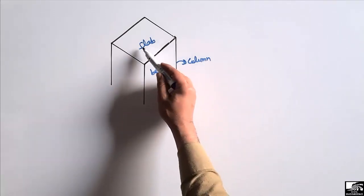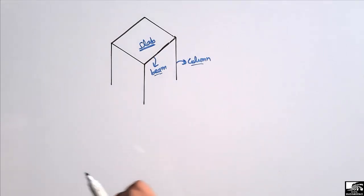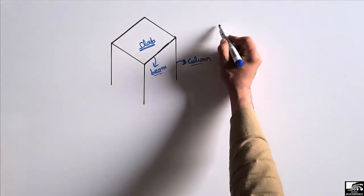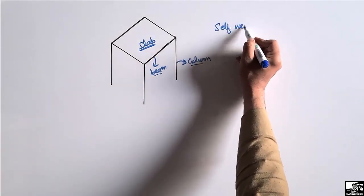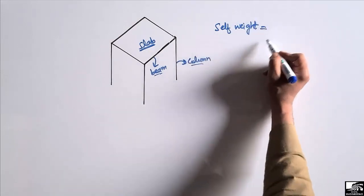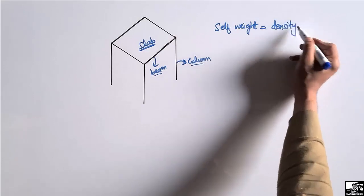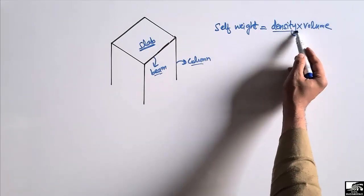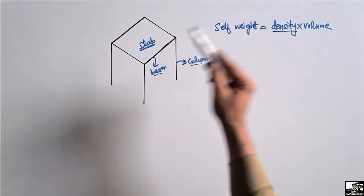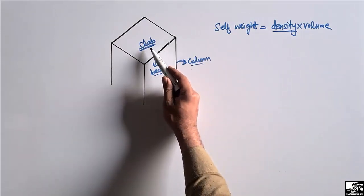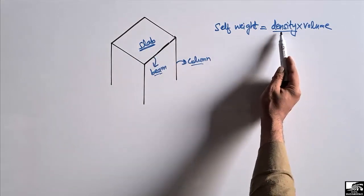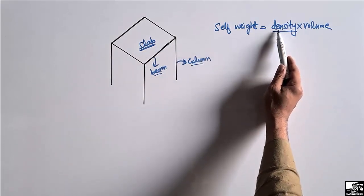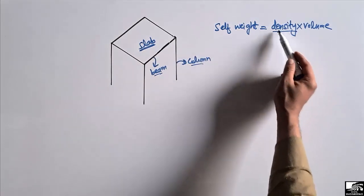We are going to find out the self weight of the slab, the beam, and the column. To find out the self weight of any structure member, you should remember this simple formula: self weight can be found out by multiplying two quantities — the density and the volume. The density is the material density used in your construction. For example, if the slab is made of masonry, we use the density of masonry; if made of reinforced concrete, we use the density of reinforced concrete.